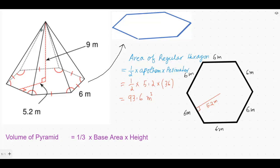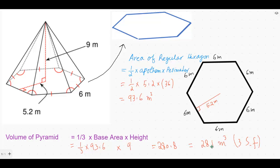We have found the base area of this pyramid, which is 93.6. Plugging this value into the volume formula, we get the volume of the pyramid as 280.8, which rounds to 281 cubic meters to 3 significant figures — the same answer as found in method one. Thank you.